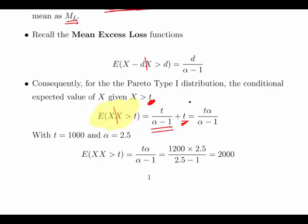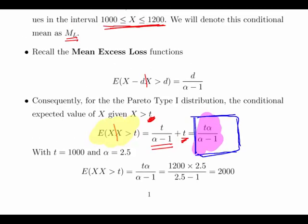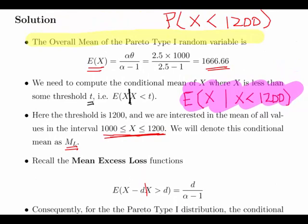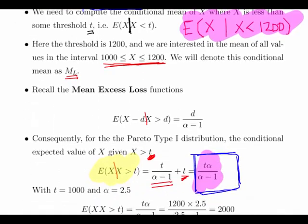We're going to add t back into our expected value so we end up with tα/(α-1). This is a conditional mean given that X is greater than a certain value. That's interesting because it has the same shape as the overall mean, so we didn't really need to do all that work.